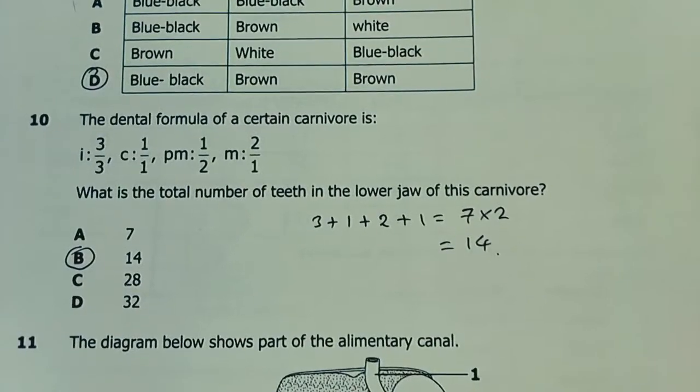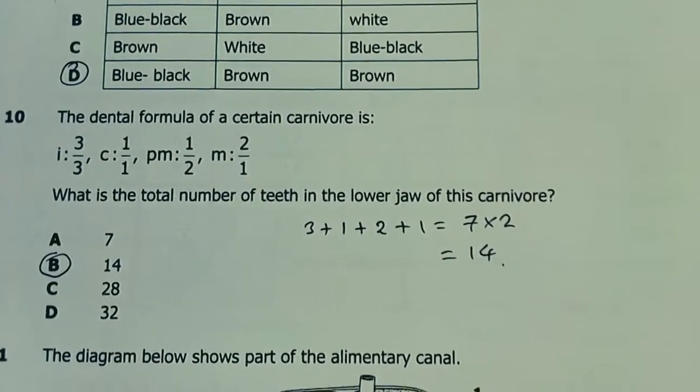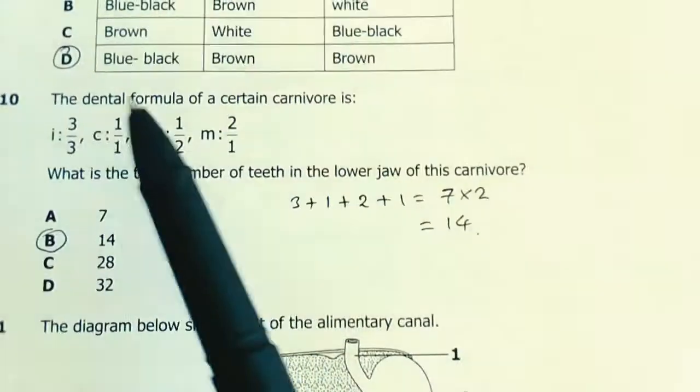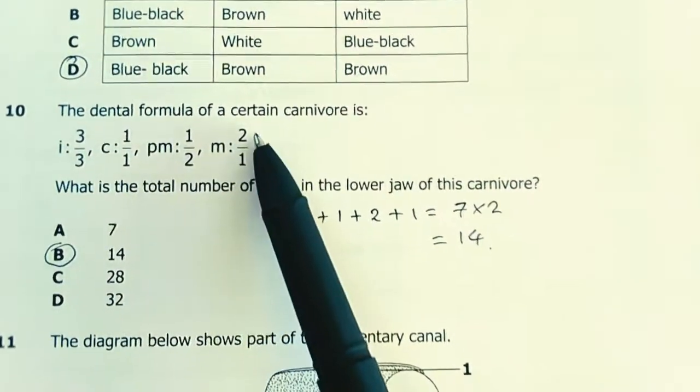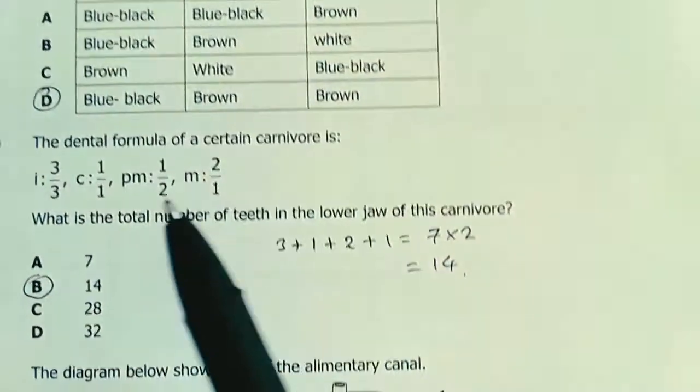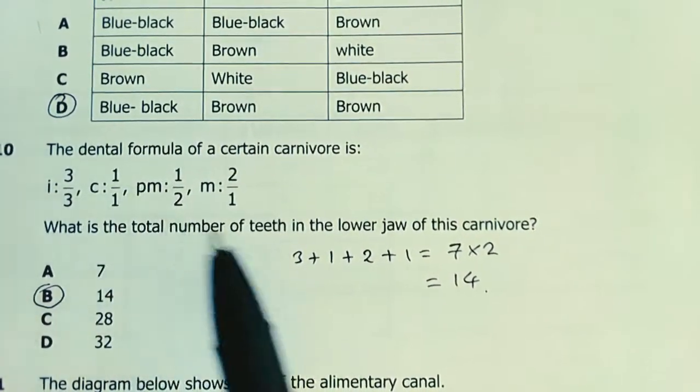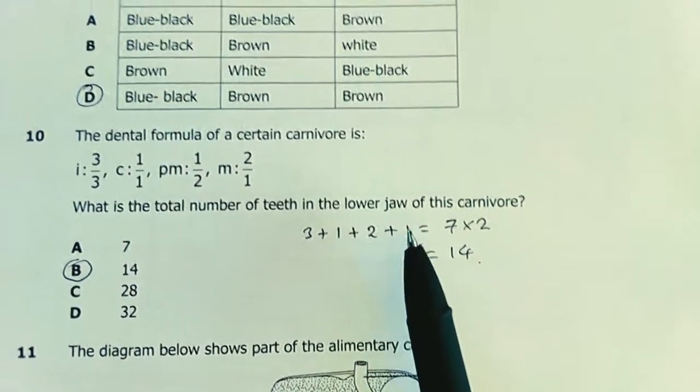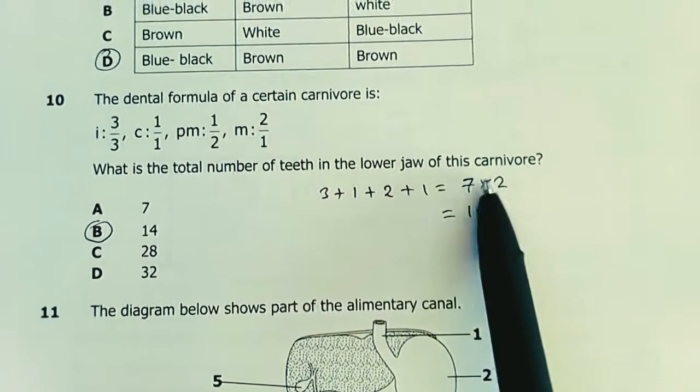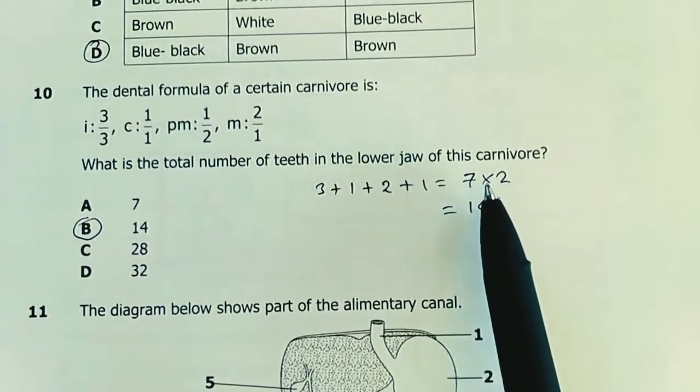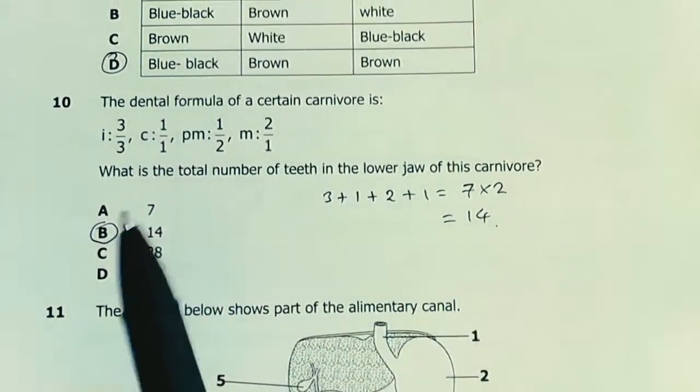Number 10. The dental formula of a certain carnivore is that, and what is the total number of teeth in the lower jaw? Dental formulas only show half the number of each jaw. The numerators represent half the number on the upper jaw. The denominators represent half the number in the lower jaw. To find the total number in the lower jaw, add the numbers: 3 plus 1 plus 2 plus 1 equals 7. Then multiply by 2 because 7 is just half the number of teeth in the lower jaw. 7 times 2 gives 14. My answer is 14.